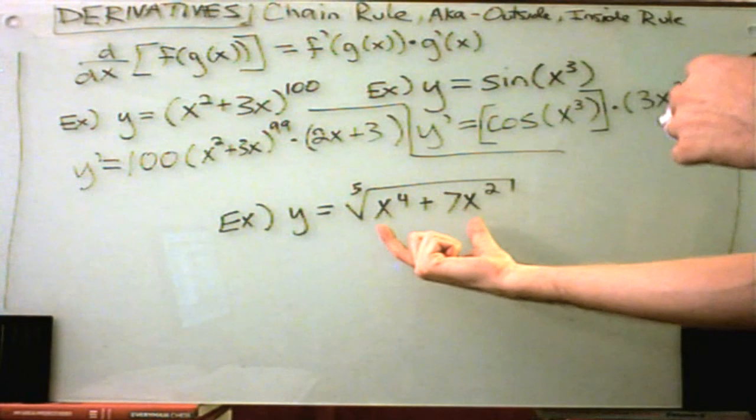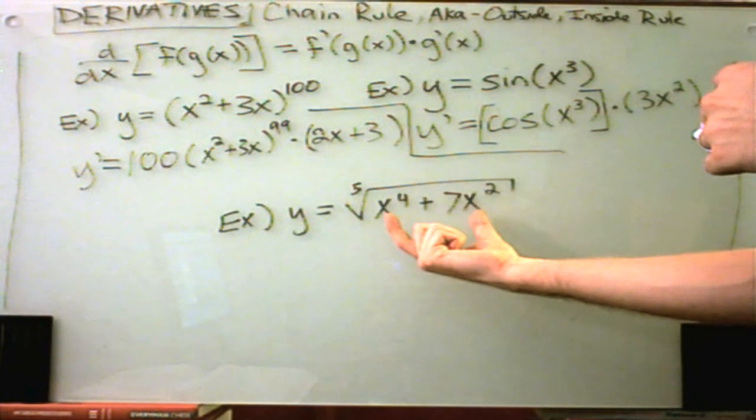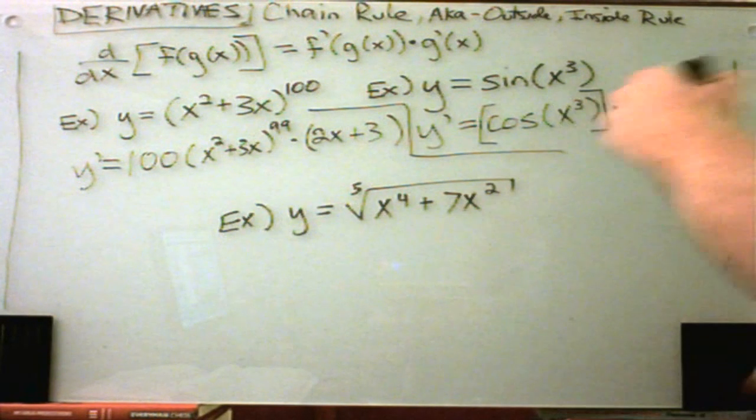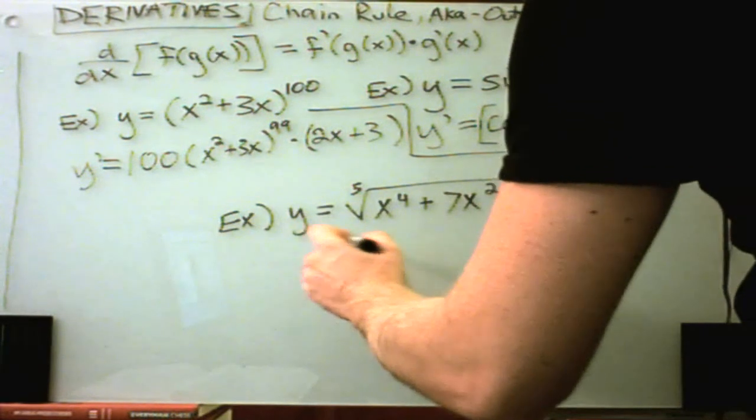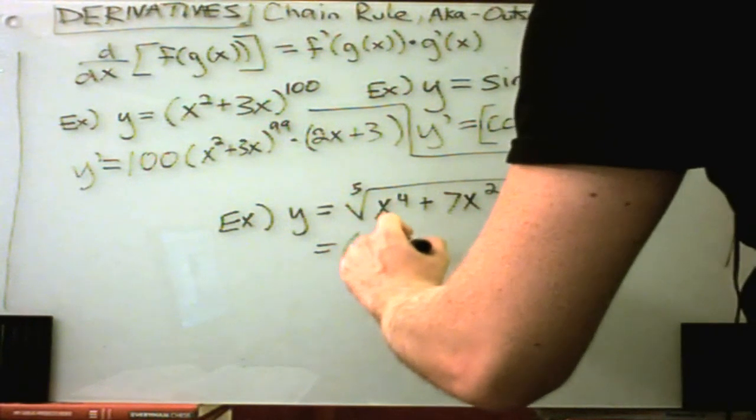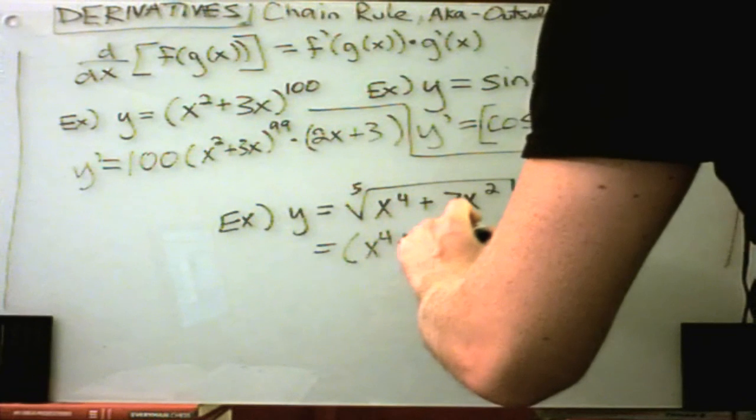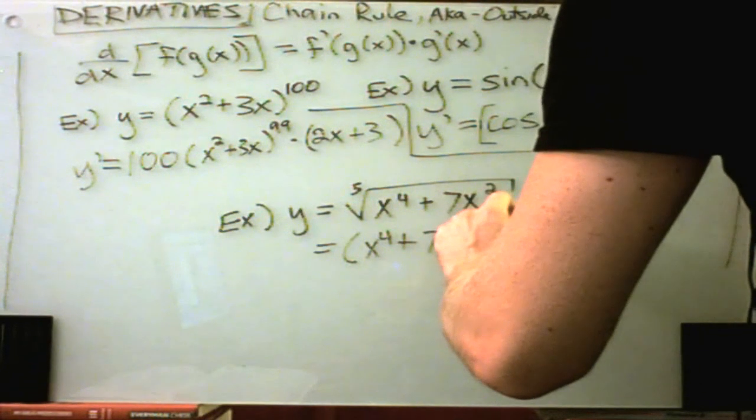Last but not least, we have x to the fourth plus 7x squared underneath the fifth root. And recall that we can rewrite this as x to the fourth plus 7x squared raised to the one-fifth power.